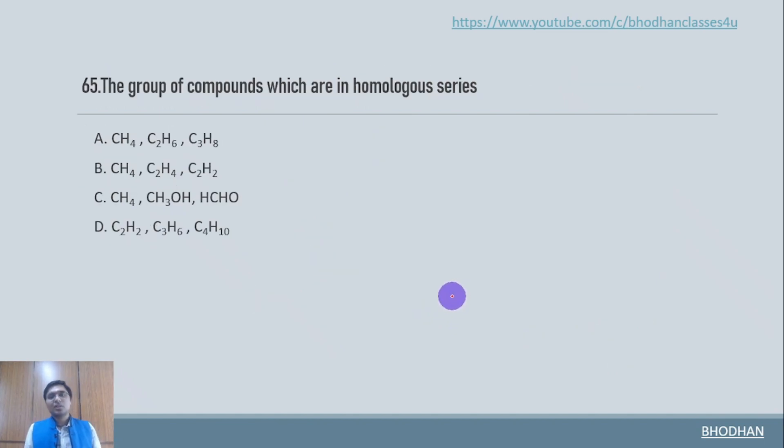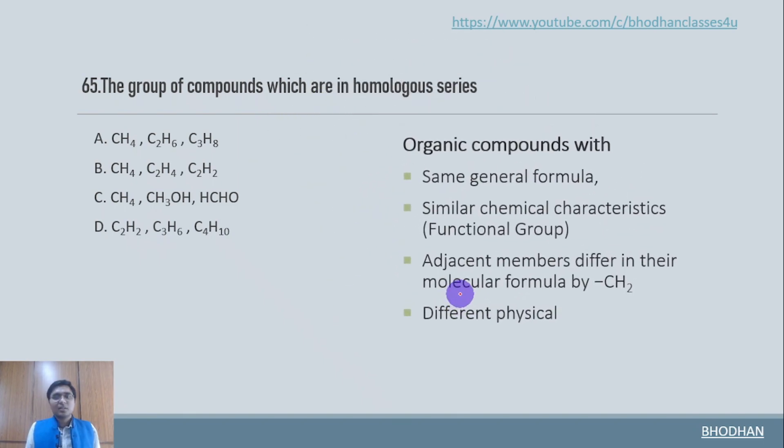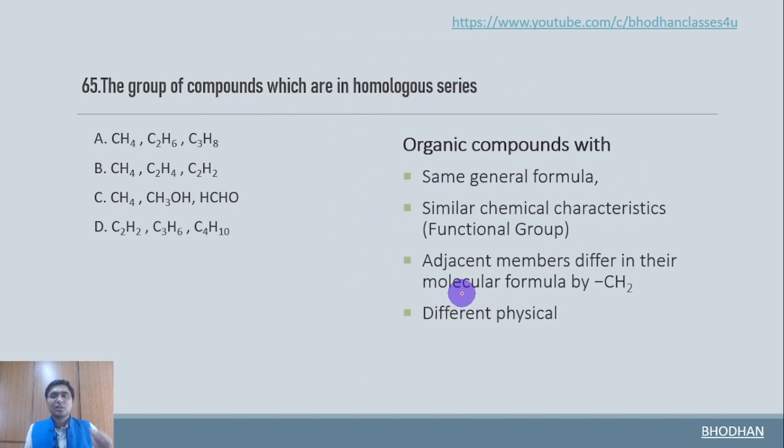Group of compounds which are in homologous series. So in order to understand whether the given compounds are in homologous series or not, we have to cross check these four important points. Out of which first three are most important. So all of them must have same general formula. And then they must have similar chemical properties which means having the same functional group. And adjacent members should differ by CH2.